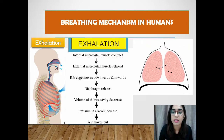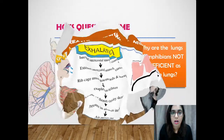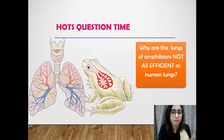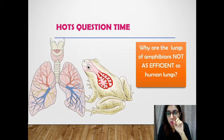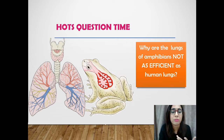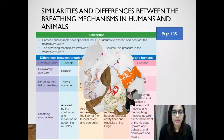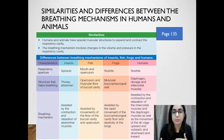Here is a question: why are the lungs of amphibians not as efficient as human lungs? Amphibian lungs are much simpler compared to human lungs. For example, amphibians do not have a ribcage or a diaphragm that helps in the expansion and compression of the lungs. You can figure out the rest yourself.